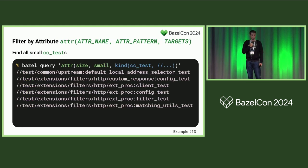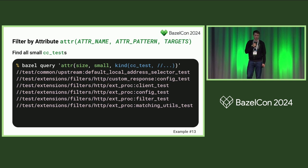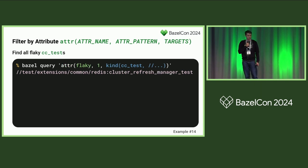The next function that allows you to filter results is filtering by attributes, which has three parameters: the attribute name, the pattern for the attribute values, and the targets. The pattern is also a regex applied on the value of the attribute, which is always turned into a string. Note that I use a subquery here — I filter first by cc_test kind, then feed that result into the targets parameter of attr(). I can also use the same attribute function to filter for flaky tests — booleans are represented as ones and zeros.